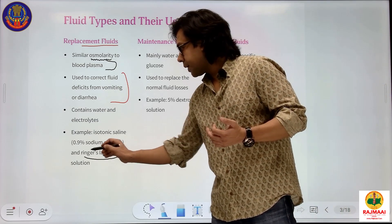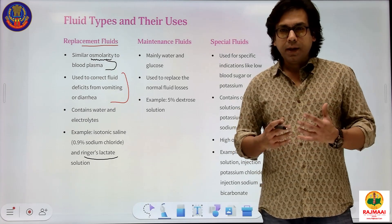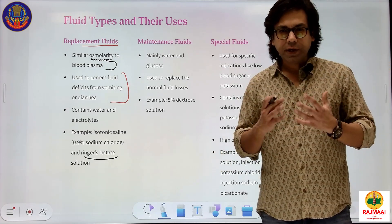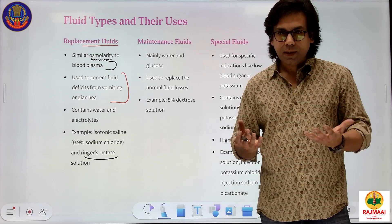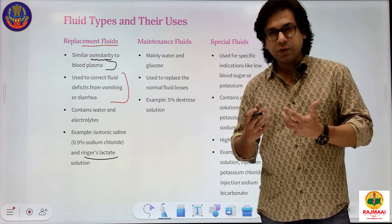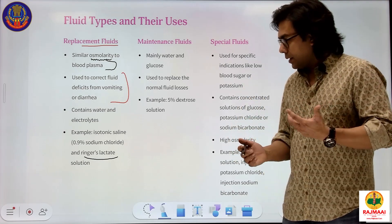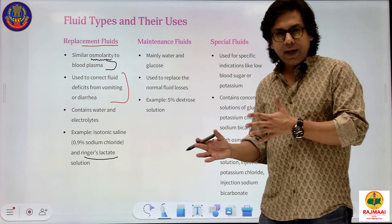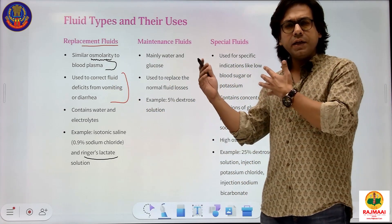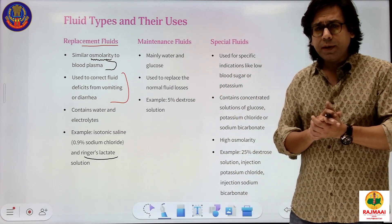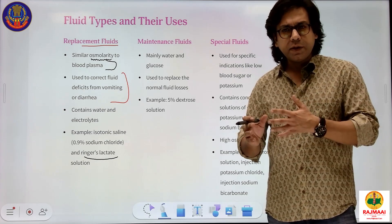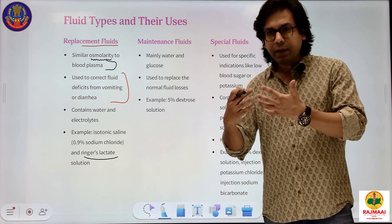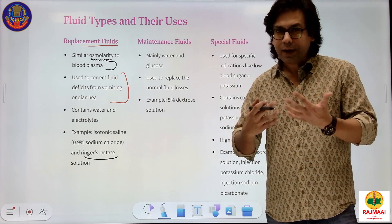Ringer's lactate solution — also known as Hartmann's solution, named after Hartman in the 1930s — is a replacement fluid. Isotonic saline is also a replacement fluid, and even 5% dextrose with 0.9% saline (NaCl) is also a type of replacement fluid. When you are having bodily losses, those have to be replaced.